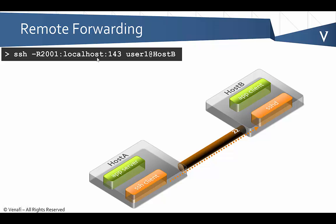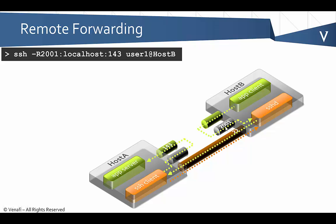Then there's a slightly crazier option — the SSH dash R for remote forwarding. In this case, I want to allow access from the client on the server side back to the SSH client. Port 143 is on the client side and port 2001 is on the server side. The server opens that port, the app client is configured to talk to local port 2001, and it forwards that traffic back in the opposite direction. It's a somewhat unusual option, but it does exist.